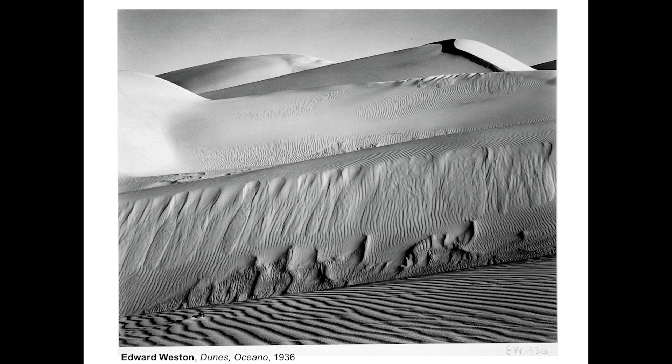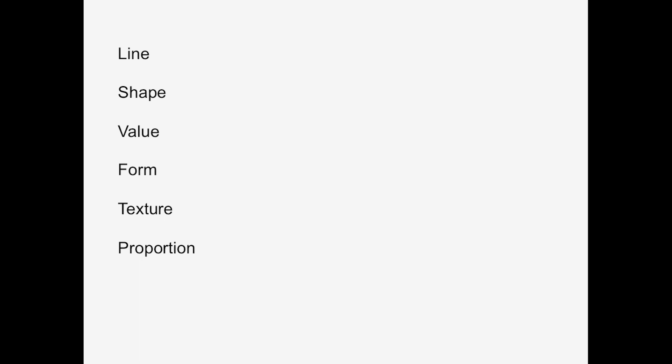Texture speaks about surface quality and a varied pattern. You can see Edward Weston's photograph of dunes in Oceano. In the foreground you can see the pattern created by wind and moving sand, and that smooths out in the background. So you have a contrast here of different kinds of textures.